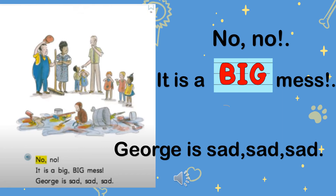No, no, no — it is a big mess. George is sad, sad, sad. Students, it is a big mess — yes or no? Yes, it is a big mess. Students, is George sad? Yes or no? Yes, George is sad. Is George happy? No, George is not happy. George is sad. Students, is George happy or sad? Of course, George is sad. Who is sad — the teacher or George? George is sad, not the teacher.